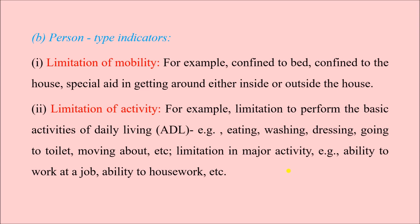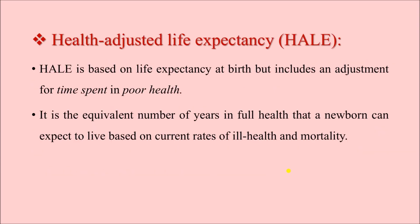There is also limitation in major activities such as the ability to work at a job or to do housework and household activities. These are all the person type indicators. Now, coming to the specific disability indicators that are commonly asked as short notes or viva questions. The first one is Health Adjusted Life Expectancy, or HALE. It is based on the life expectancy at birth but includes an adjustment for time spent in poor health.